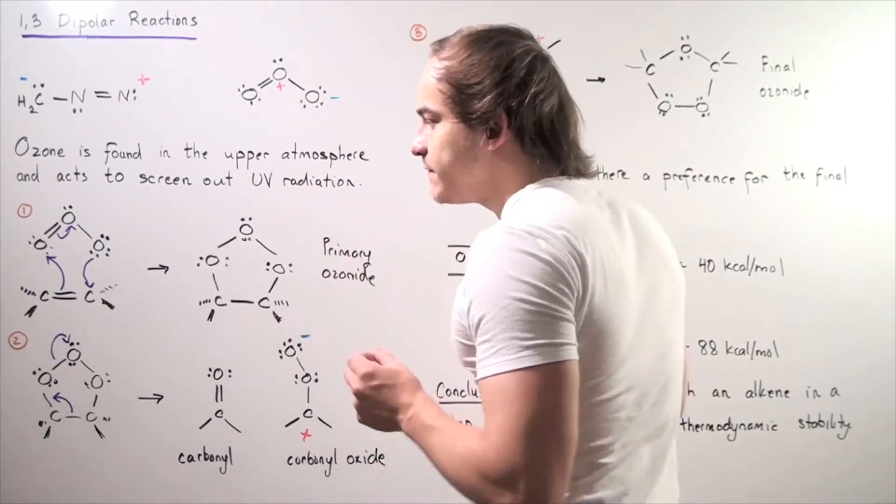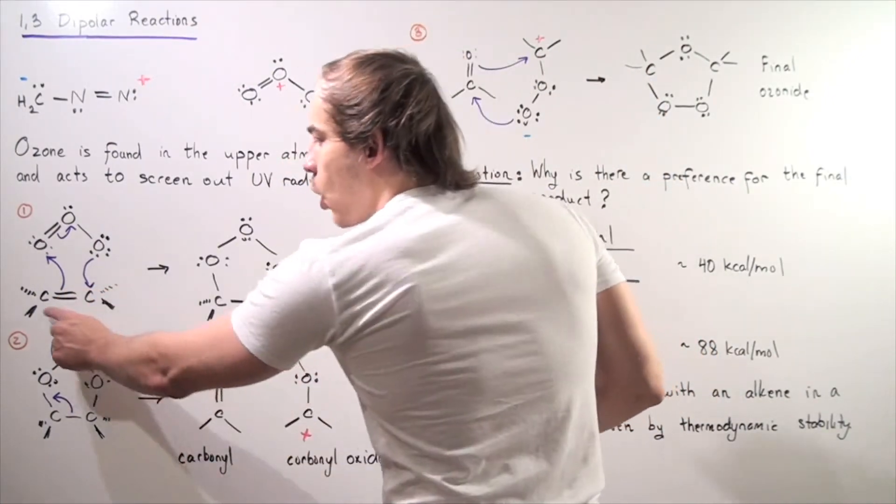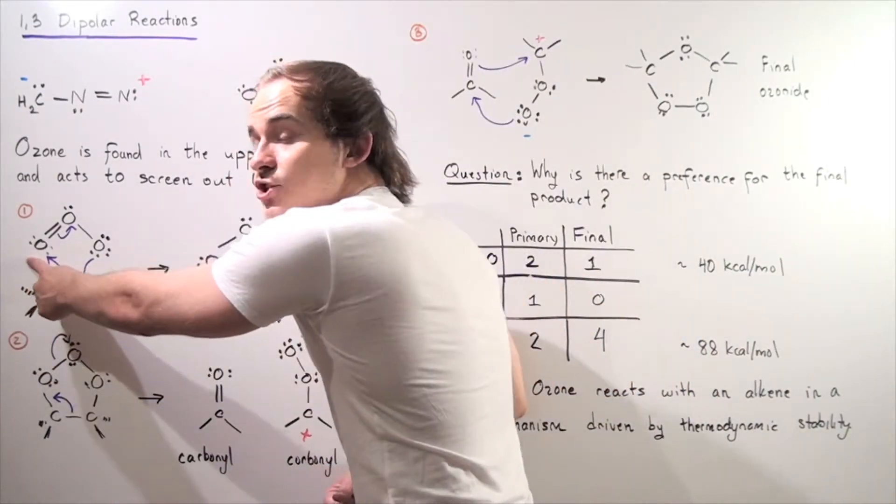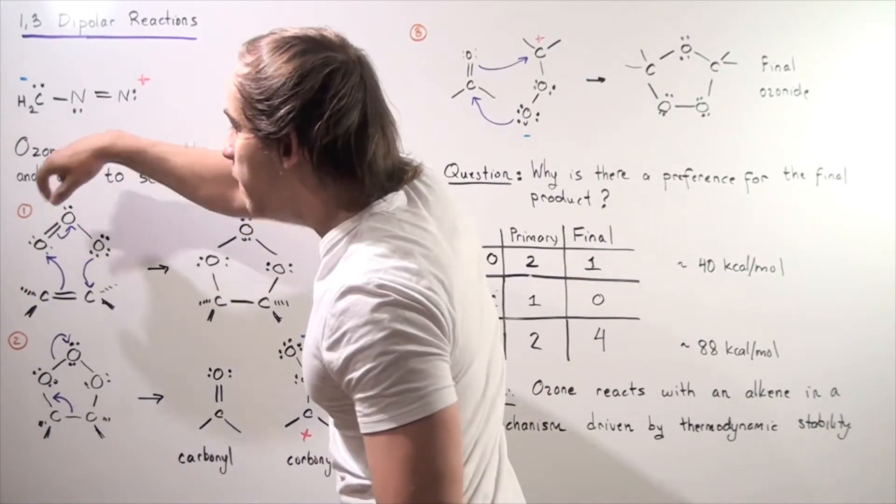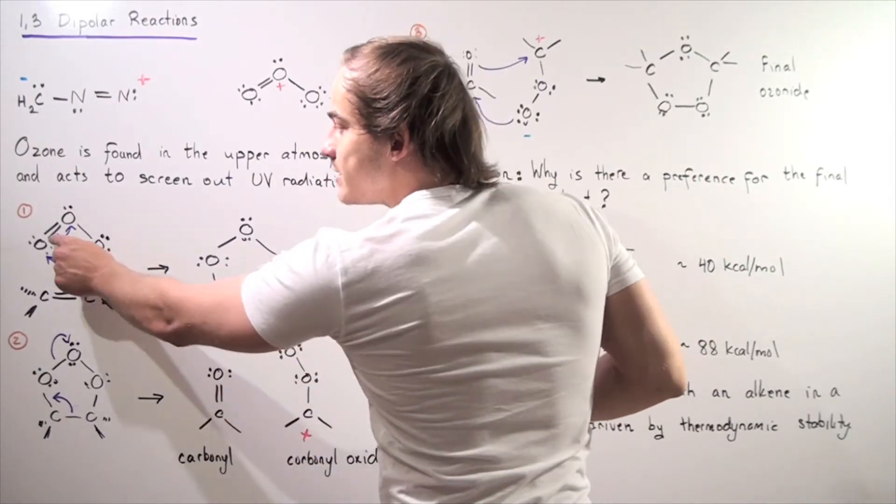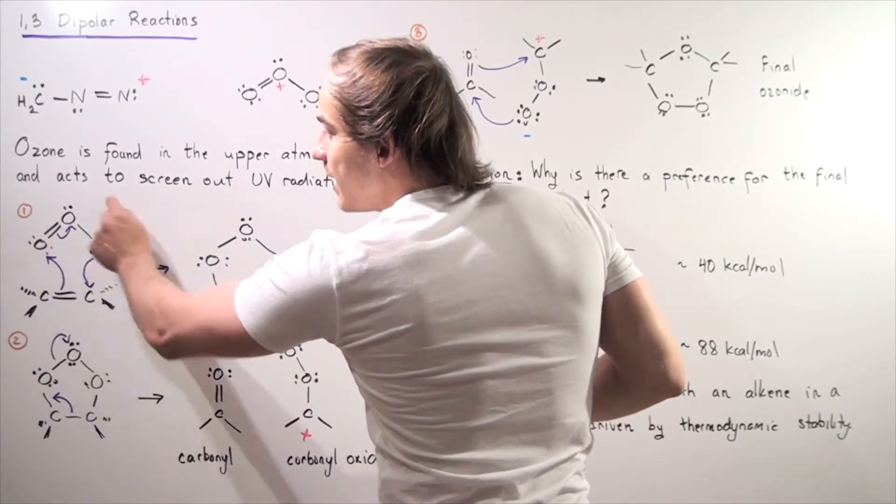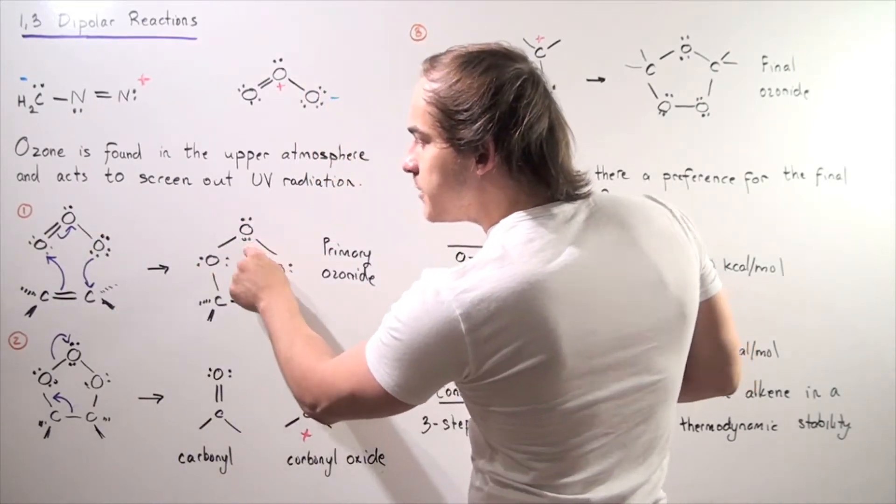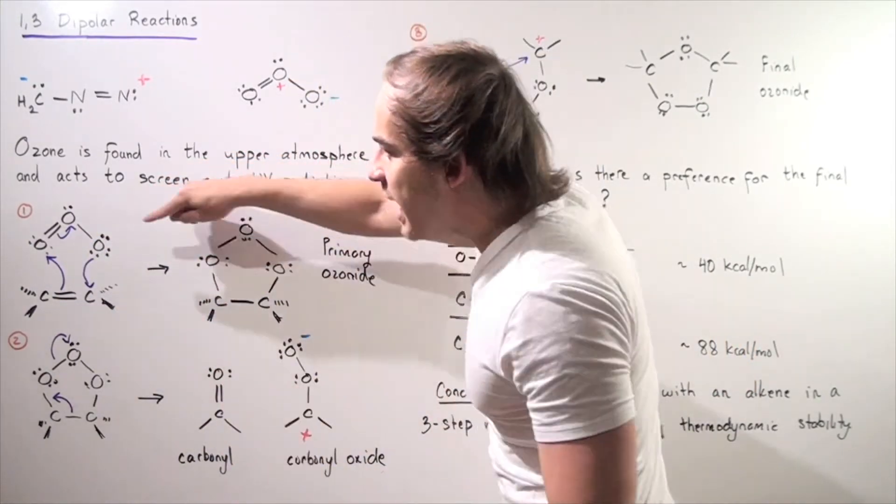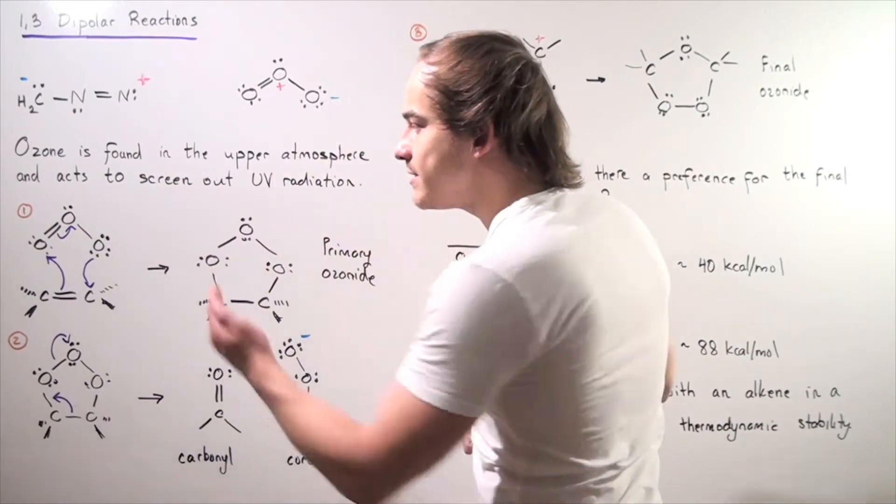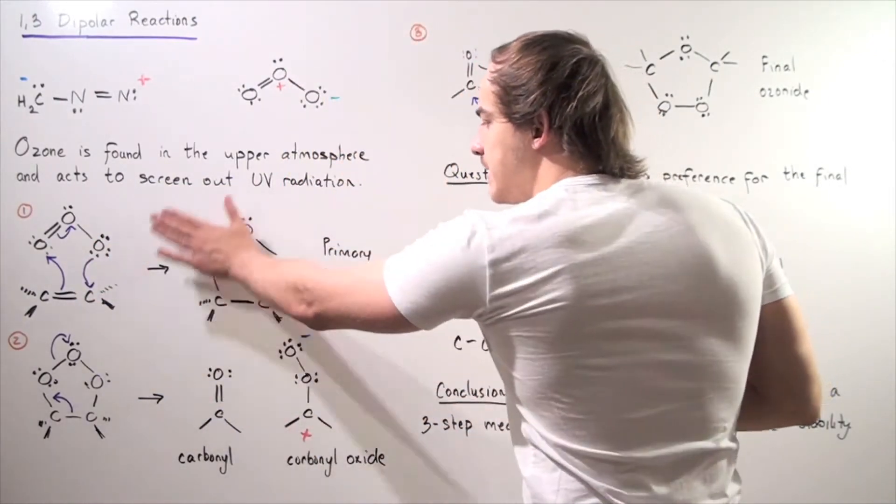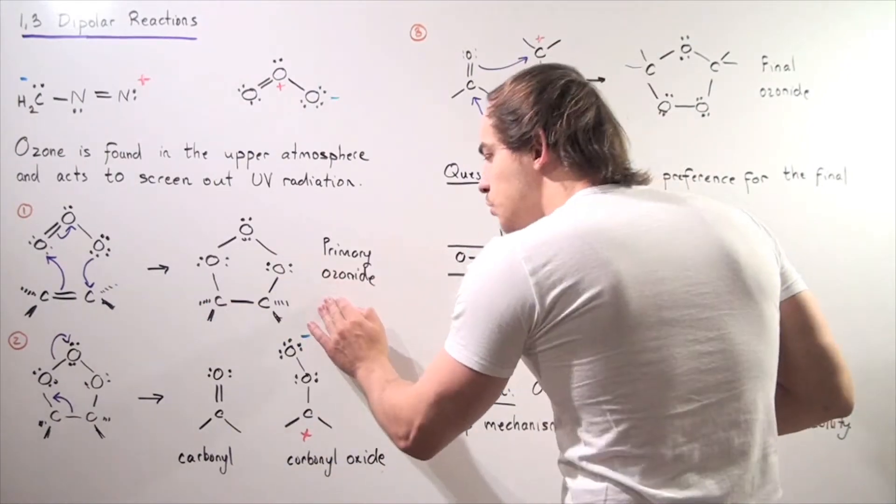So the two electrons found in the pi bond of the carbon-carbon bond attacks this oxygen, displacing this double bond, the two electrons in the pi bond of the oxygen-oxygen, those two electrons go onto this oxygen. And then at the same time, a lone pair of electrons on the end oxygen attacks this carbon forming the following primary ozonide.